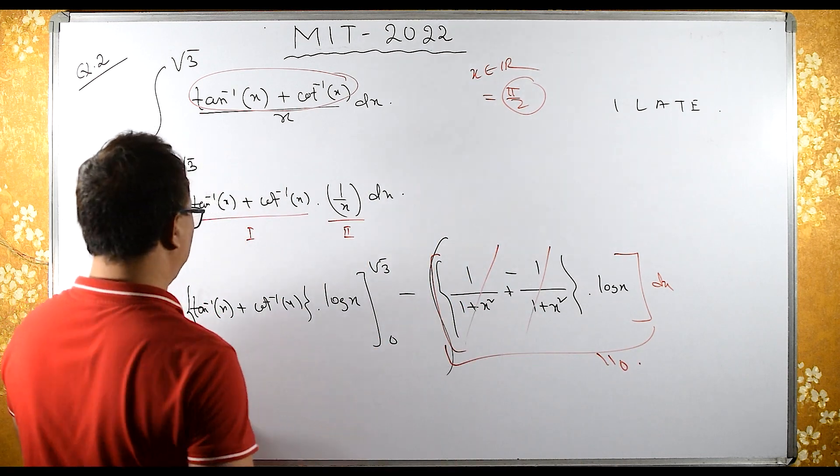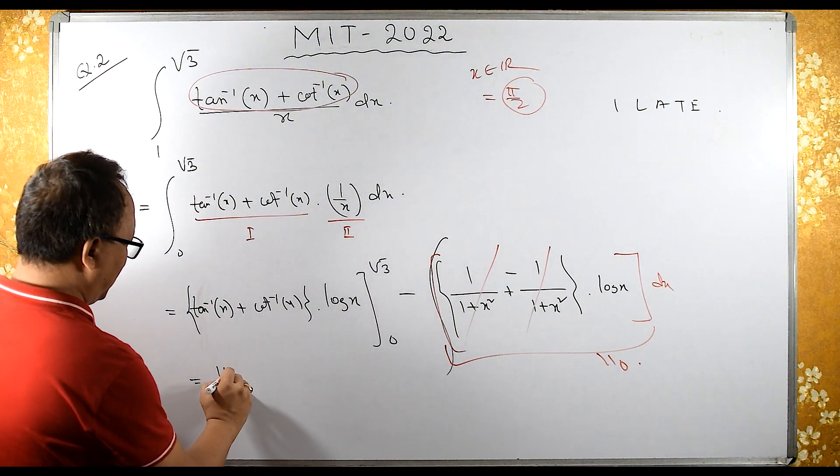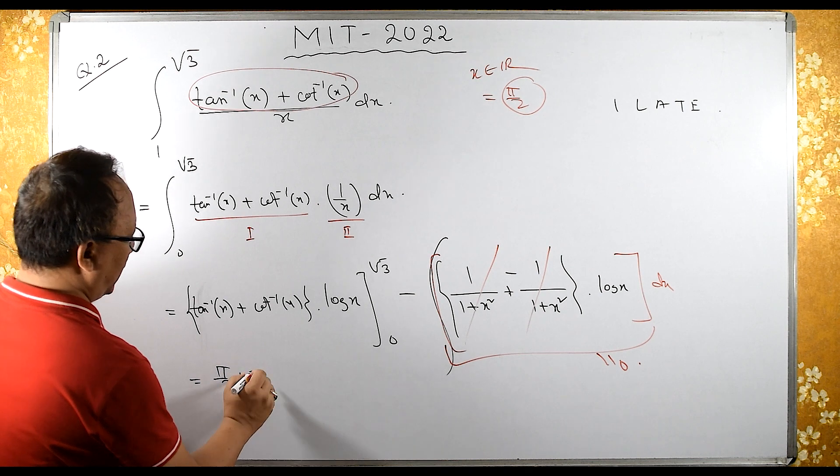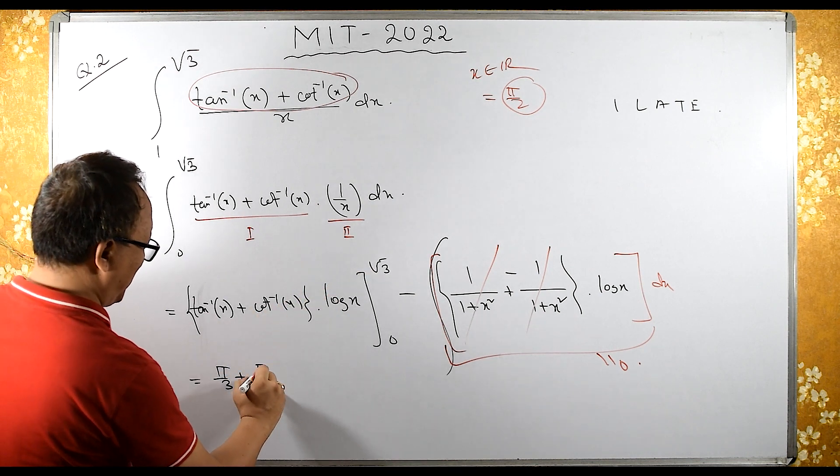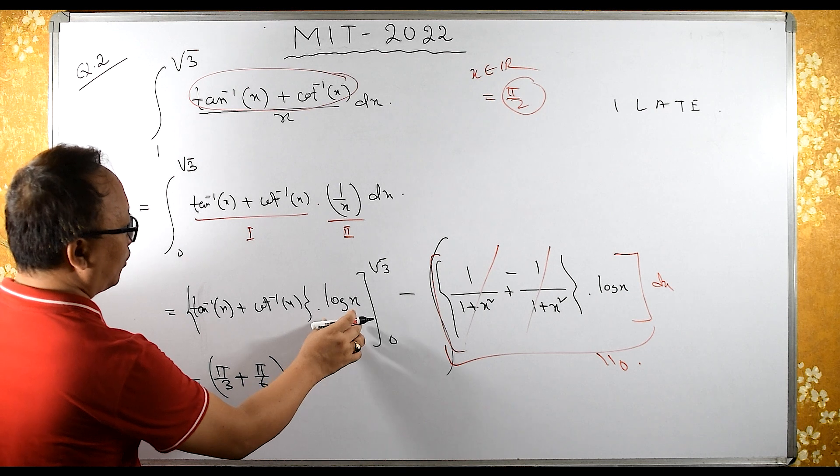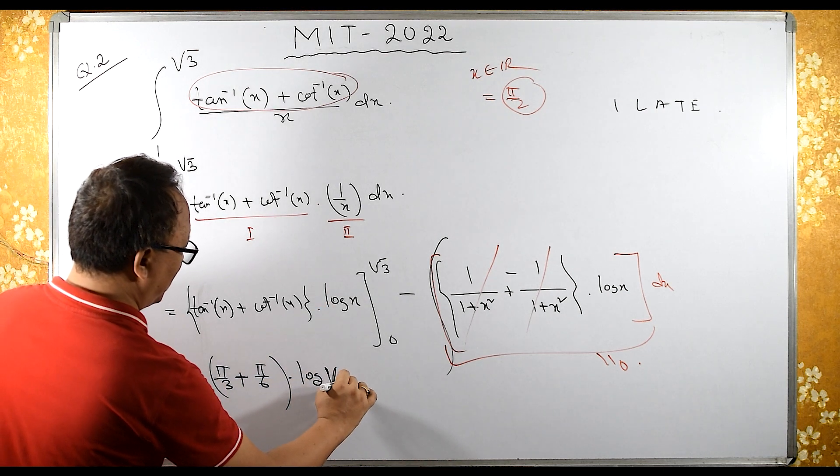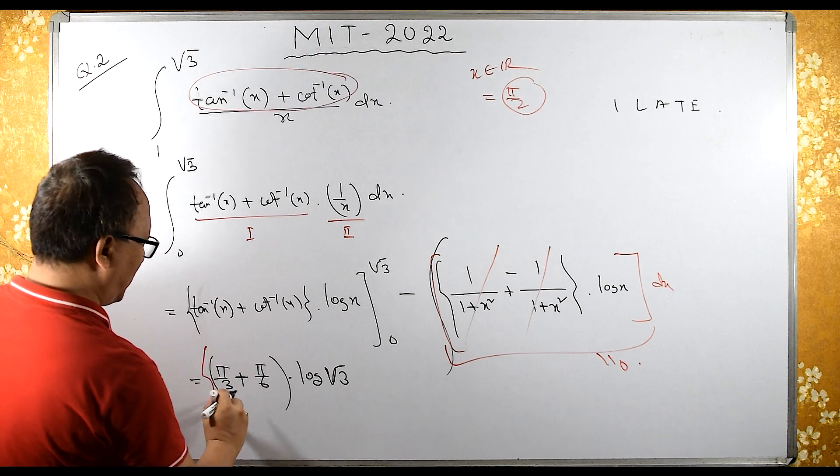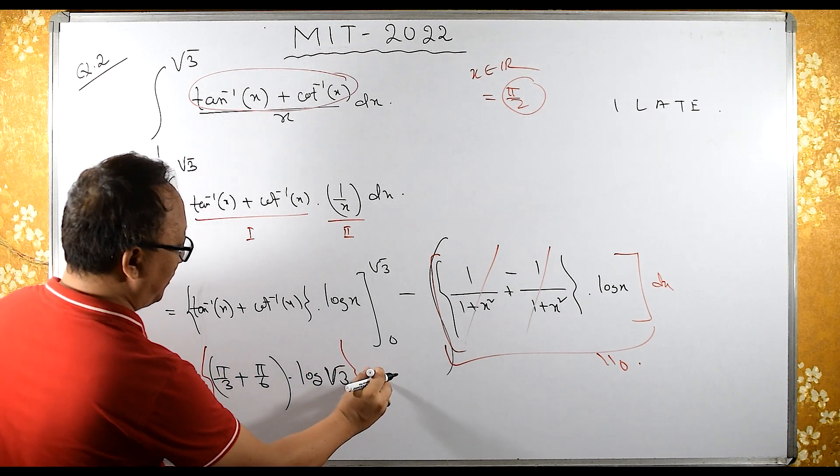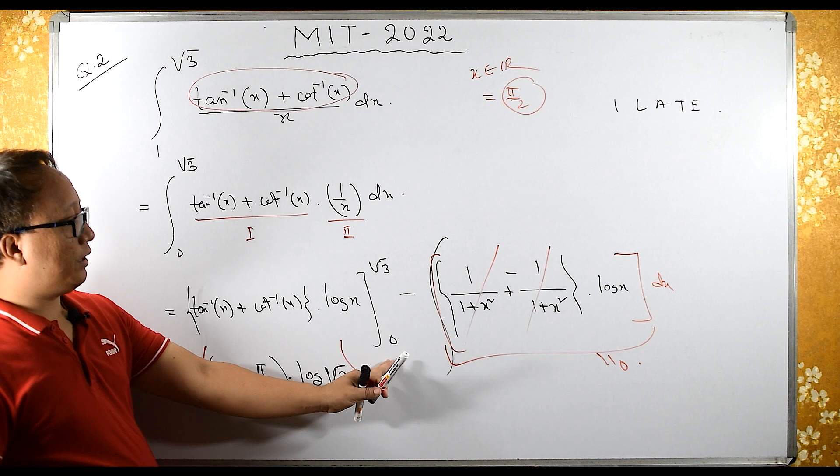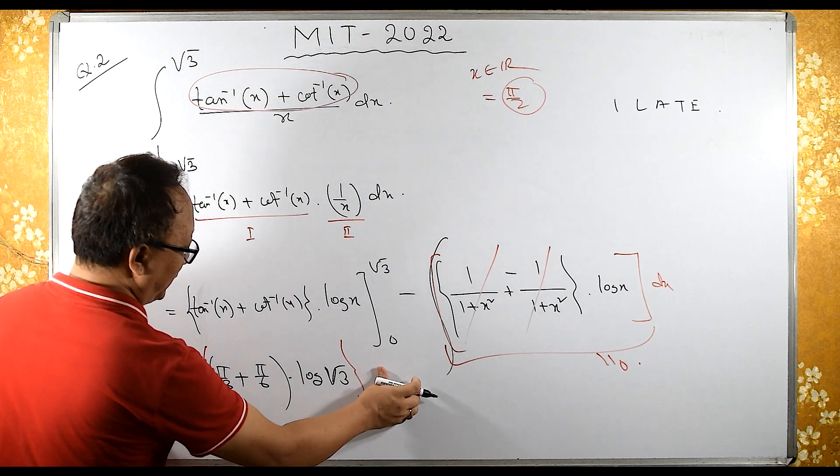Now let's substitute. Tan inverse root 3 is pi by 3, and cot inverse root 3 is pi by 6, times log of root 3. This is the upper limit. Minus the lower limit, which is log 0 equals 0, so everything becomes 0.